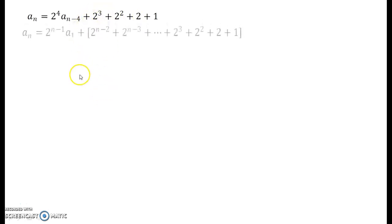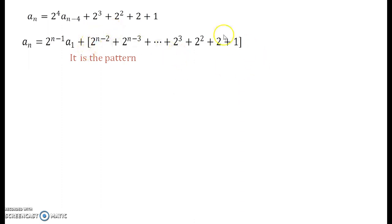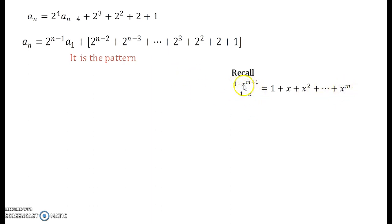So finally the pattern will be: aₙ = 2ⁿ⁻¹ · a₁ + (2ⁿ⁻² + 2ⁿ⁻³ + … + 1). Now we need to write a compact form for the bracket. Recall the formula: 1 + x + x² + … + xᵐ = (1 − xᵐ⁺¹) / (1 − x). It's okay if you've done this at school level — otherwise, jot it down as a new formula.